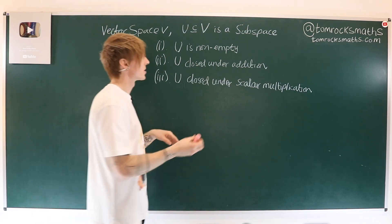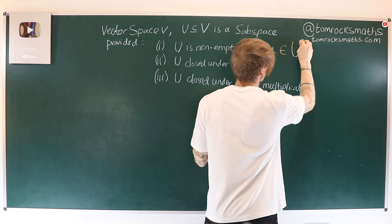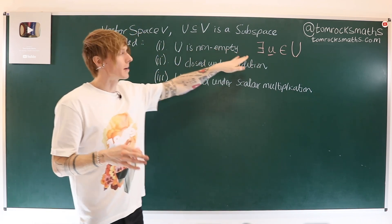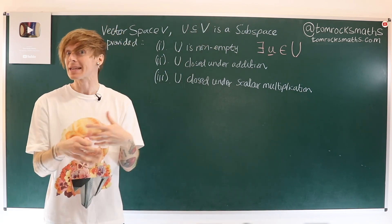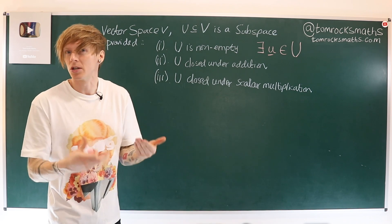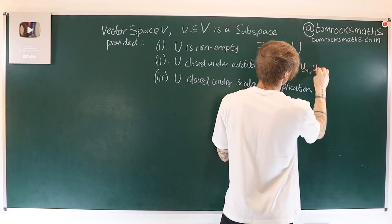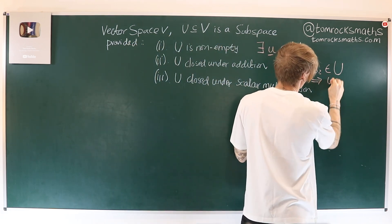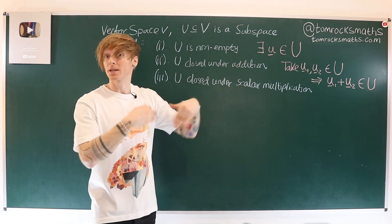The first property — non-empty — says there exists some vector, lowercase u, that belongs to our set capital U. That something can be zero; the zero vector is an object and would mean the set is non-empty. The second property — closed under addition — means that if u1 and u2 belong to U, then u1 plus u2 also belongs to U.